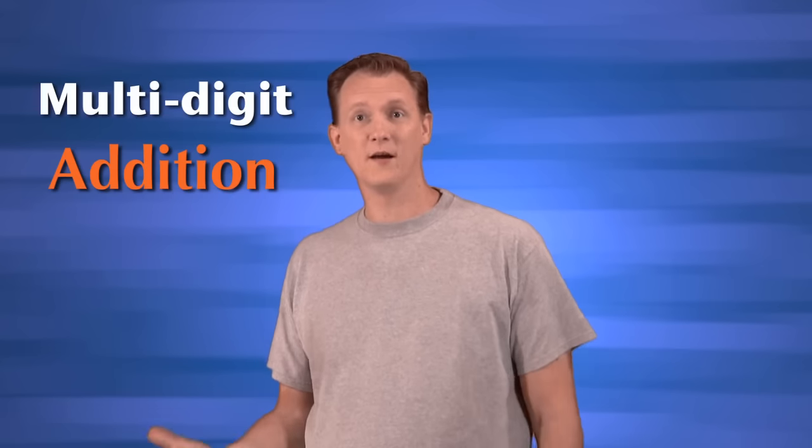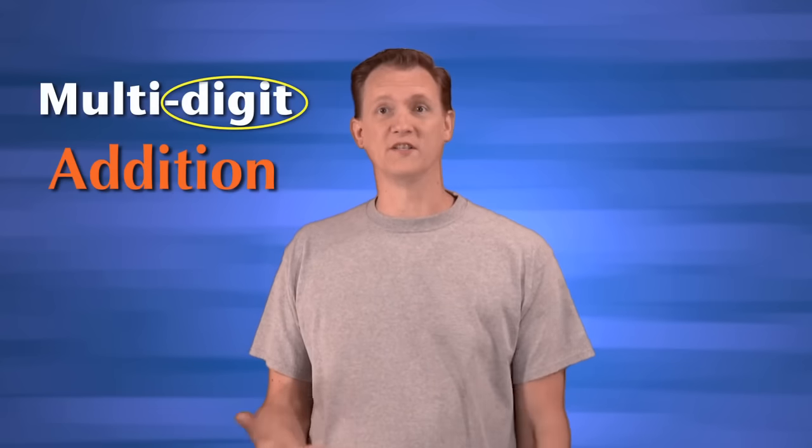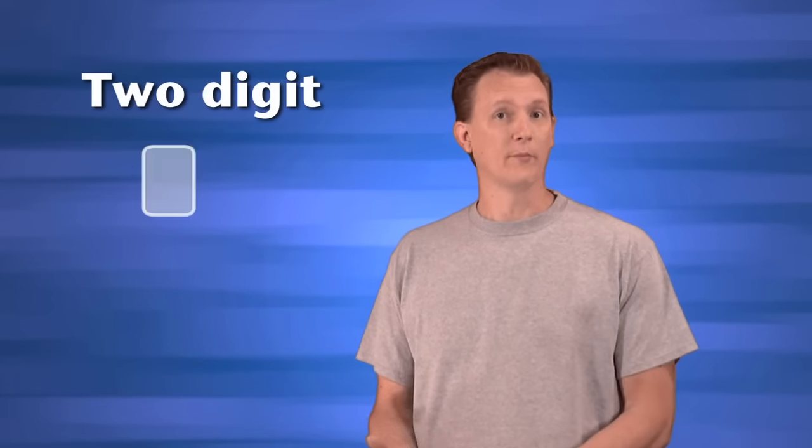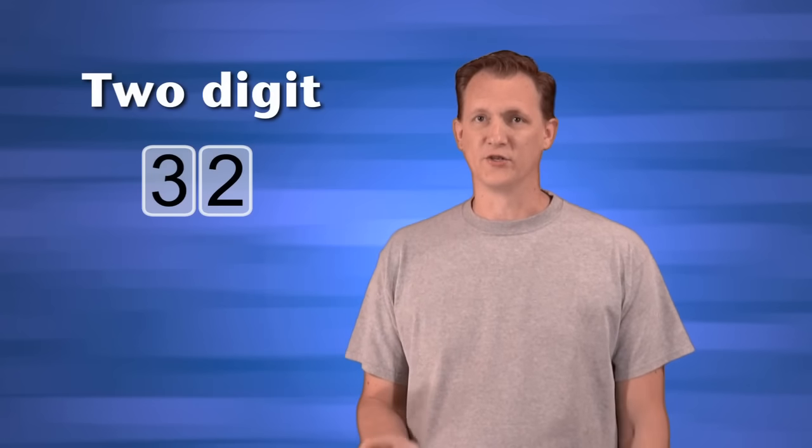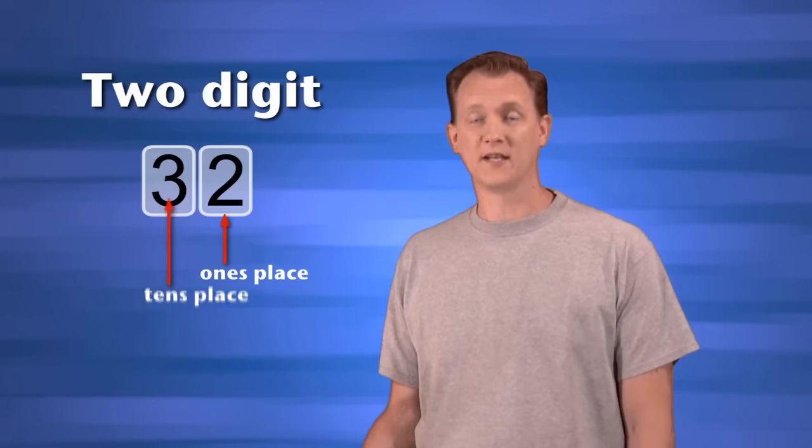A multi-digit number is just a number with more than one digit, which is anything greater than 9. Two-digit numbers use two number places, like the number 32. It has a 2 in the ones place and a 3 in the tens place.